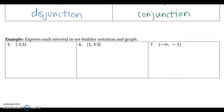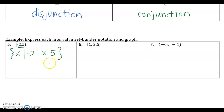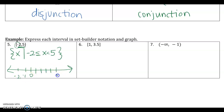The last three examples involve expressing an interval in set builder notation and graphing it on a number line. For example 5, the interval is [-2, 5). In set builder notation, that's: x such that negative 2 is less than or equal to x, and x is less than 5. On the number line, I place a closed bracket on negative 2 and an open bracket on 5, then darken the area in between.